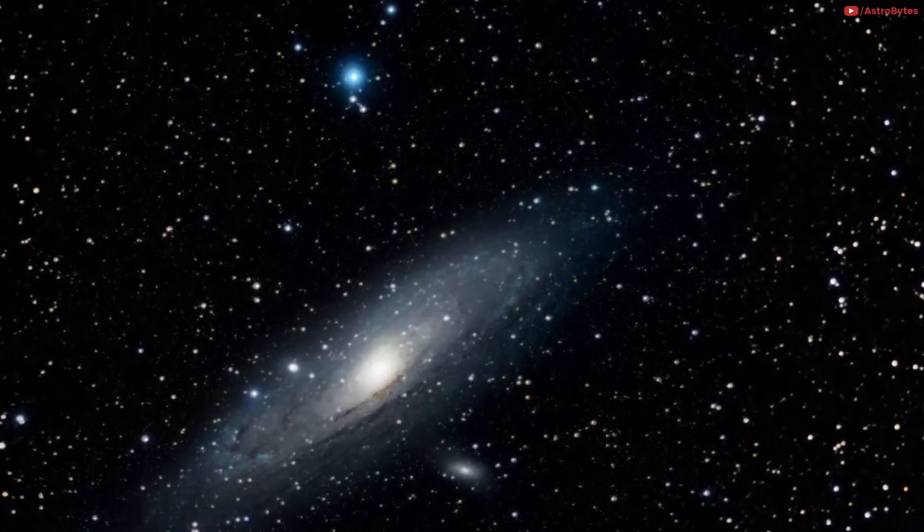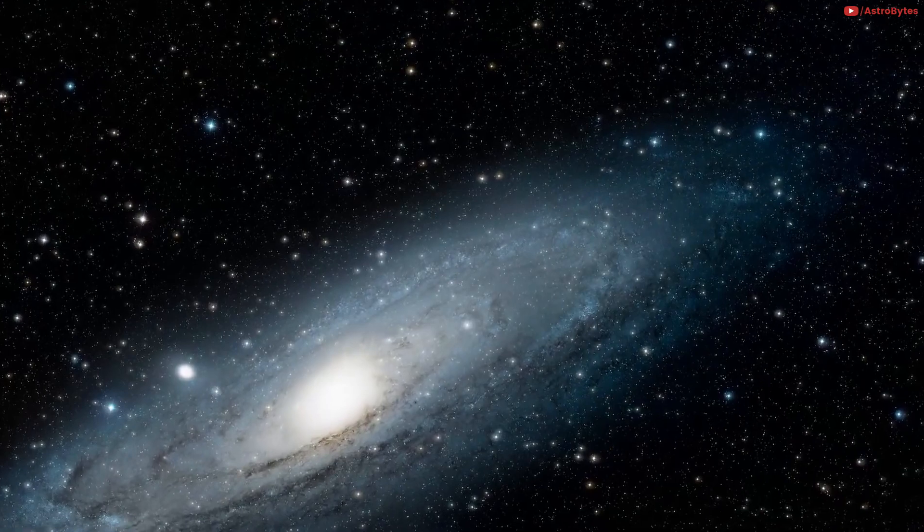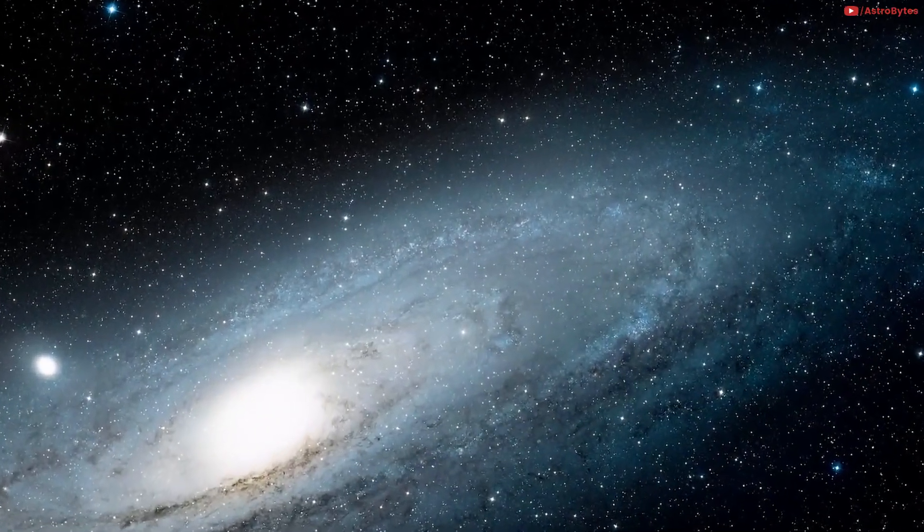Using an eight-inch telescope, M31 presents a spectacular sight with its diffuse dust lanes stretching out from its bright center. And if these vast spiral arms are included, the Andromeda galaxy would cover around 20 degrees of sky, which is about 40 full moons.